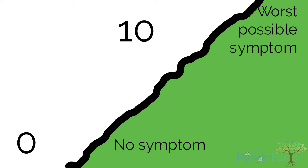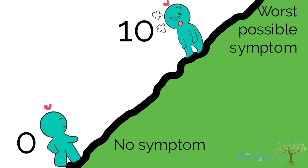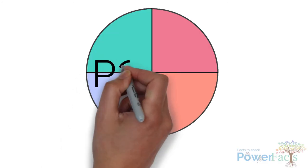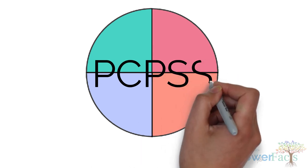For example, for shortness of breath, 0 would be you at the foot of Bukit Timah Hill — feeling great and ready to go — and 10 would be you struggling as you reach the top of the hill with 10 more meters to go.